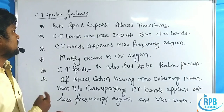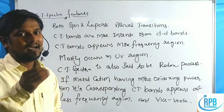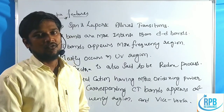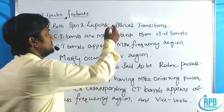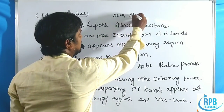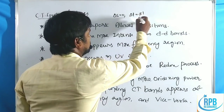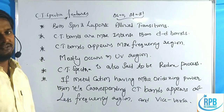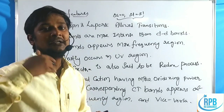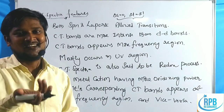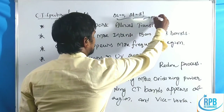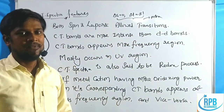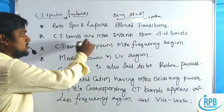The first key point about charge transfer spectra: both spin-allowed and Laporte-allowed transitions occur. If delta S equals zero, it is spin allowed; delta L equals plus or minus one when it is Laporte allowed. Since charge transfer transitions are both spin and Laporte allowed, they show more intense color - very bright and intense. Charge transfer bands are more intense in color than dd bands.